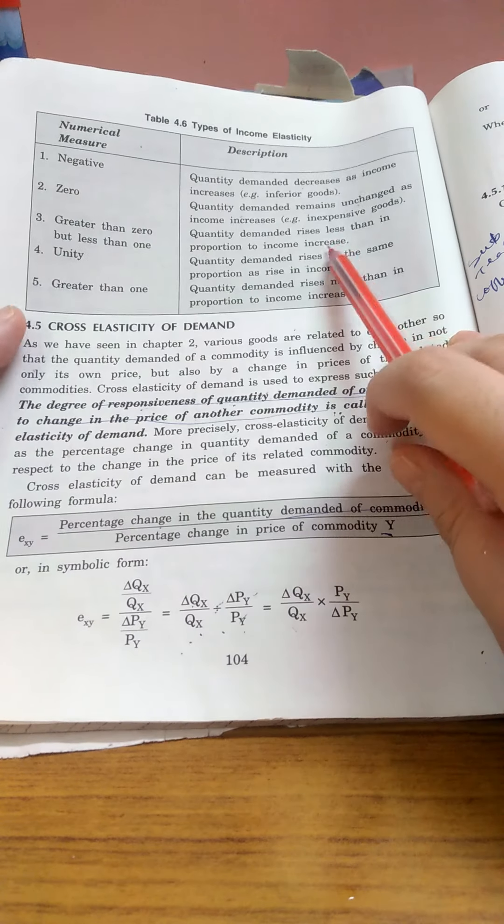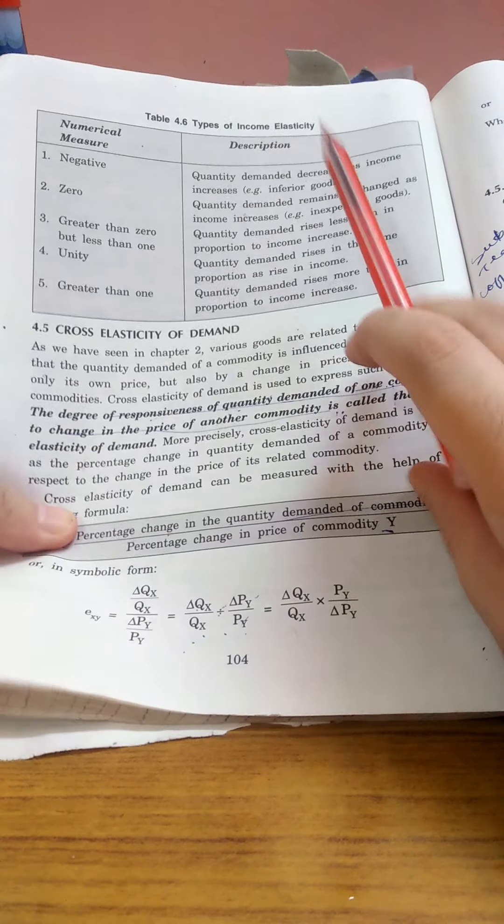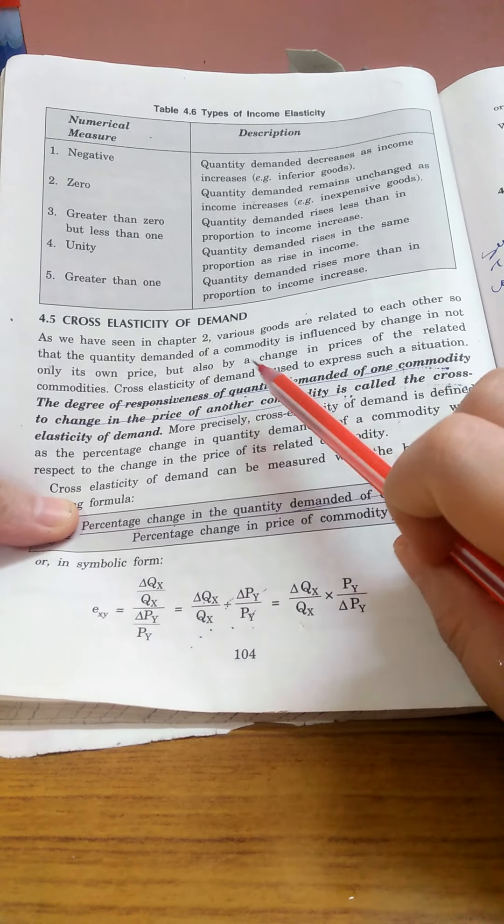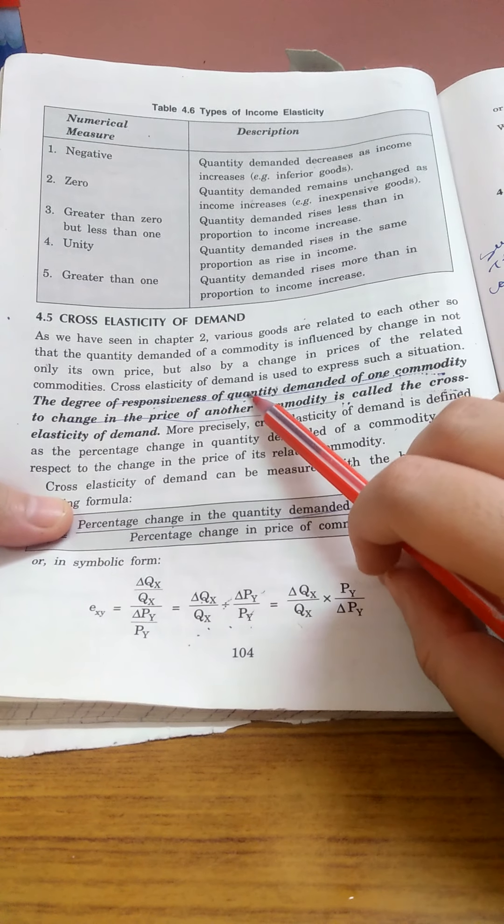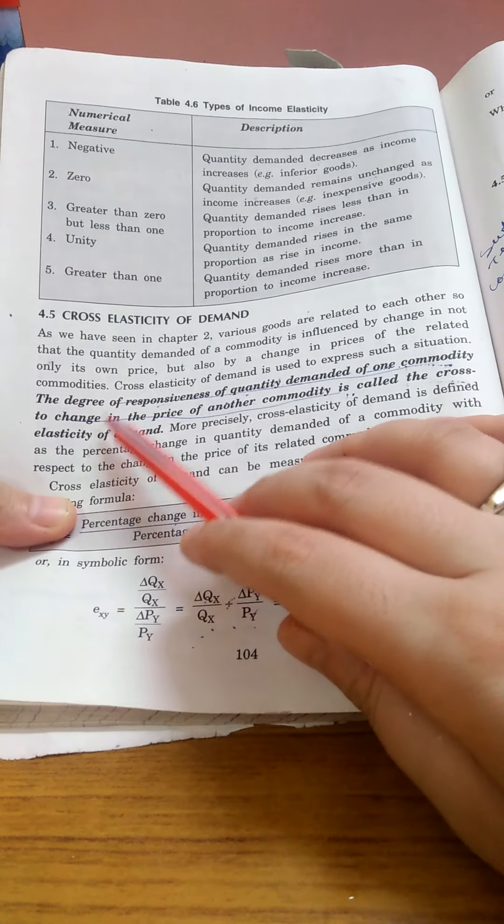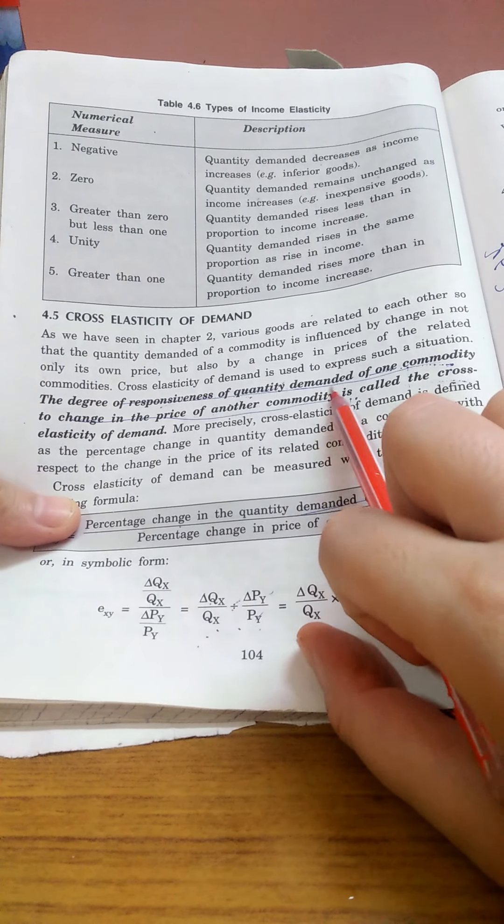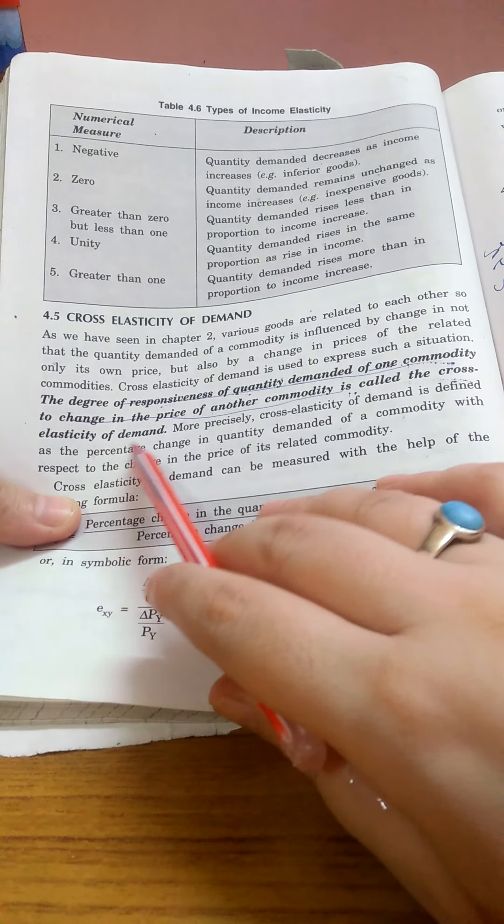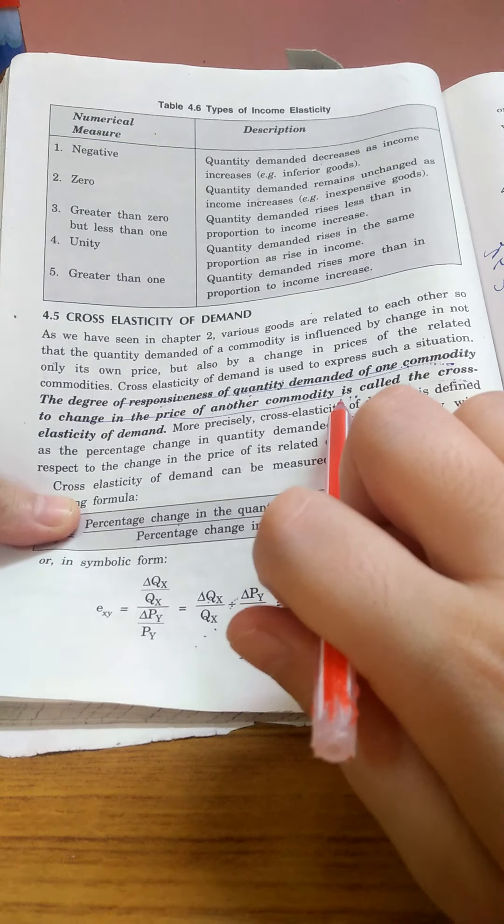So let's start without any dilemma. First of all, what is cross elasticity of demand? It is the degree of responsiveness of quantity demanded of one commodity to a change in price of another commodity.